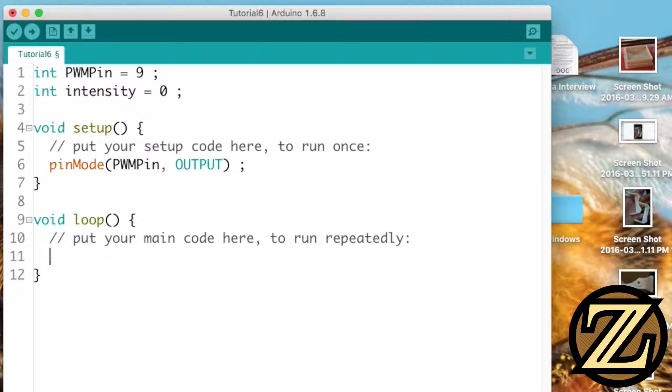In your loop function increment your intensity value by 1. Then evaluate your intensity value and check whether or not it is above the value of 255. If it is above that value set your intensity back to 0.